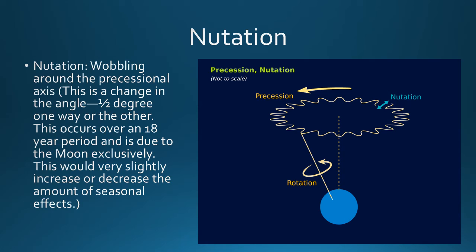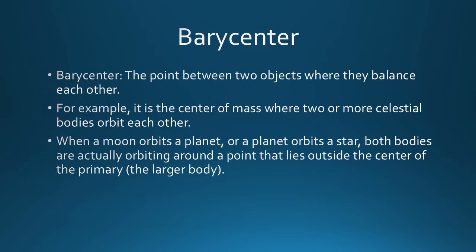Nutation is the wobble that occurs as Earth rotates and revolves. This wobble does create a small change in the angle — the 23.5-degree tilt can shift a half degree one way or the other. This occurs over an 18-year period, happening very slowly. It's caused by the gravitational pull between the Earth and the moon. This slight shift can have a small increase or decrease in the amount of solar radiation we receive, affecting seasons.